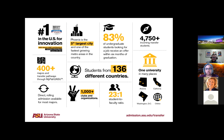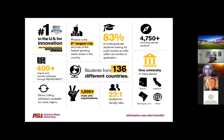We are one university in many places. Our historic founding campus, established in 1885, is the largest with about 60,000 students taking classes there. If that's a bit overwhelming, we also have our Polytechnic campus in Mesa and West campus in Glendale with about 5,000 students each, and a campus in downtown Phoenix with about 13,000 students. Depending on your interests or where you want to be geographically in the Phoenix area, you can choose which campus works for you.